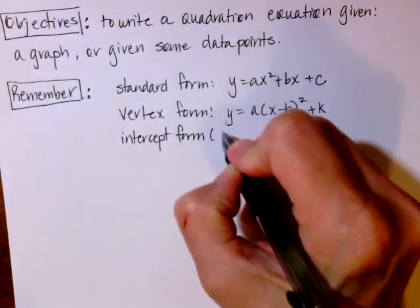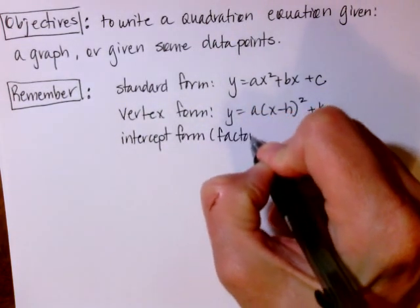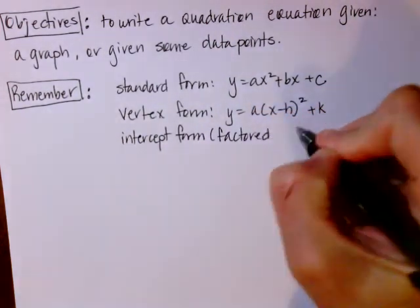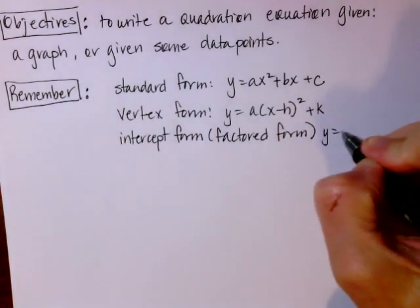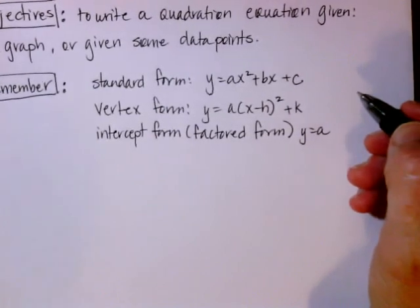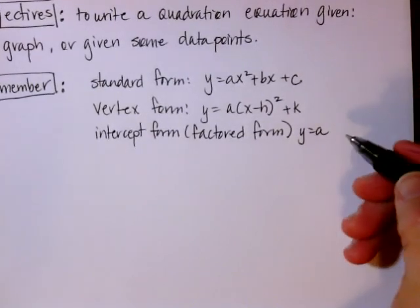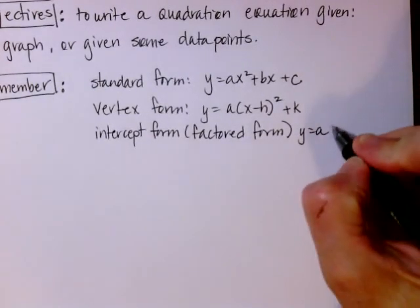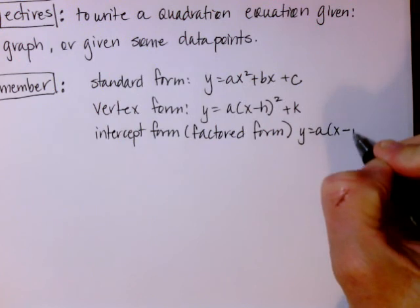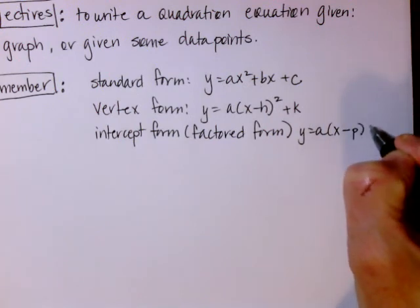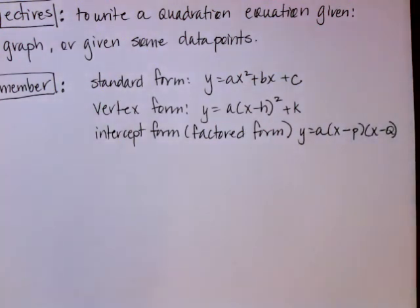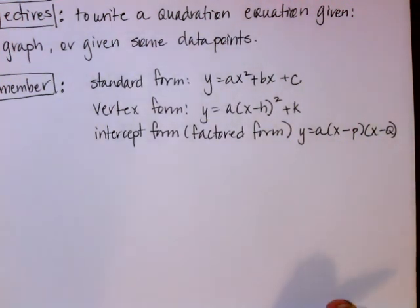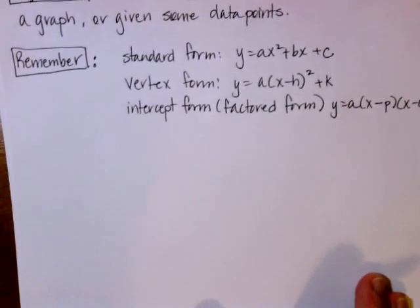Vertex form is y equals a times the quantity x minus h, squared, plus k. That one's perfect for graphing. And then our next form is called intercept form — some books call it factored form.